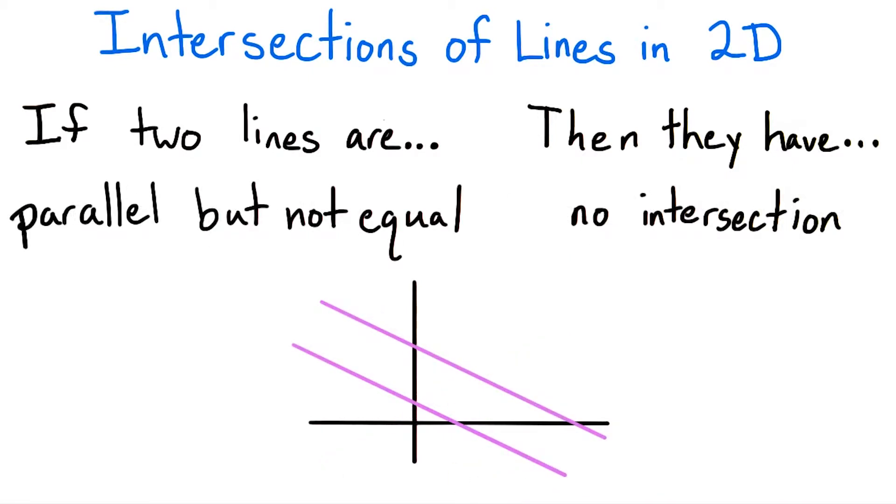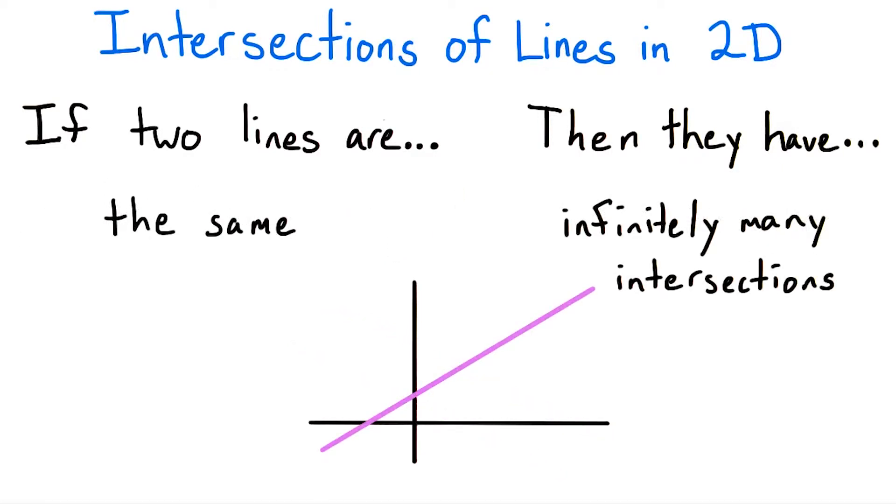However, if two lines are parallel, then there are two possibilities. They might not intersect at all, or they might turn out to be the same line, so-called coincident lines, in which case they will intersect in infinitely many points.